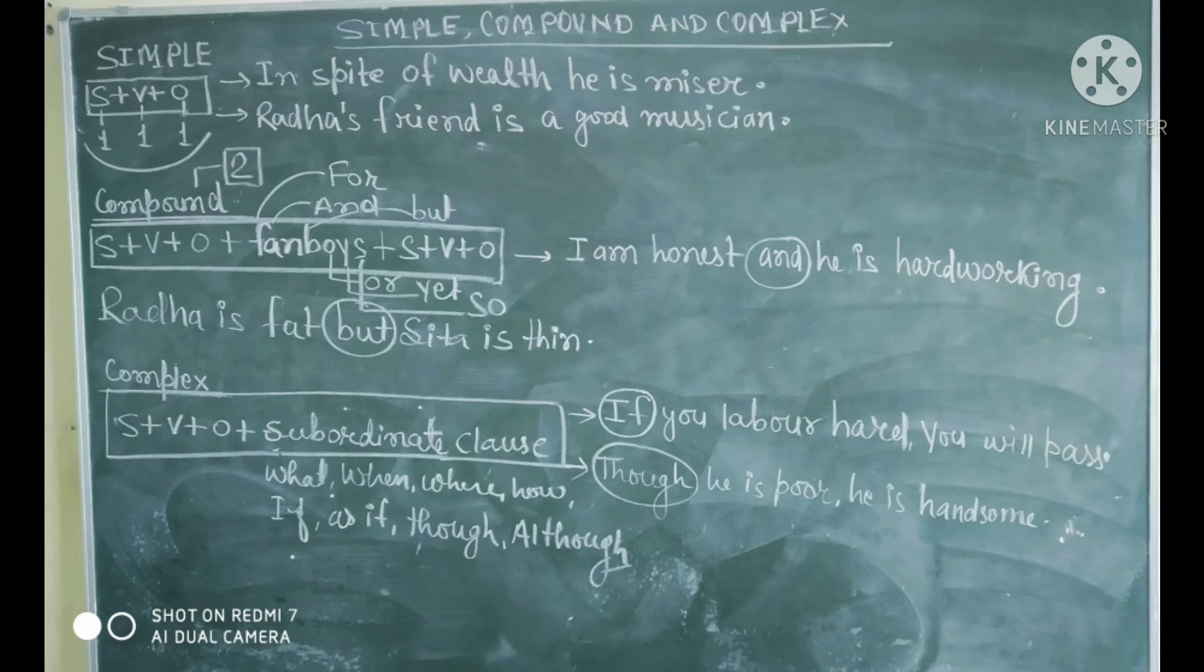Now, we are going to the compound sentence. In compound sentence, you will find that there will be Fan voice. That means coordinating conjunction will be there. Fan voice: F se for hai, A se and hai, N se nor hai, B se but hai, O se or hai, Y se yet hai, S se so hai. Agar aapke sentence mein ye for, or, but, yet, so, ye sab conjunction hai, to aapka sentence compound hoga. For example, I am honest and he is hardworking. Yaha pe and ko circle kar diya hai, aur and aapka Fan voice ka example hai. Next example: Radha is fat but Sita is thin. Yaha pe but hai, but Fan voice ka example hai. In this way, aapka yeh dono sentence compound hai.